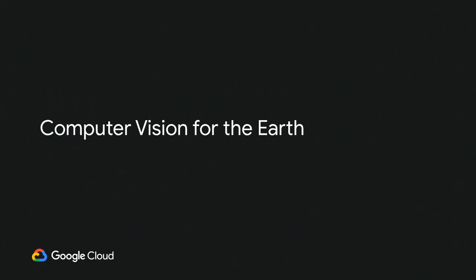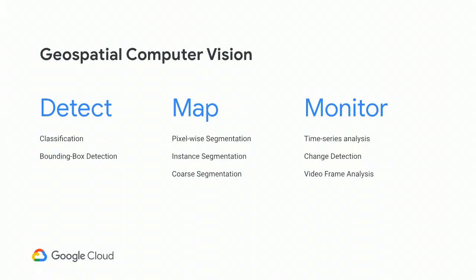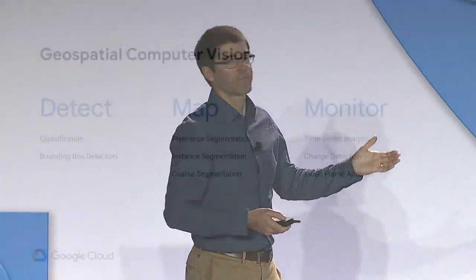Within satellite imagery and computer vision, we think about these along three axes: detect, map, and monitor. Detect is using computer vision and machine learning to find infrastructure, find points of interest, the things you're interested in all around the globe. Mapping those across the globe in different regions of interest. And then being able to monitor those in real time, understanding changes, and using that to drive your business.